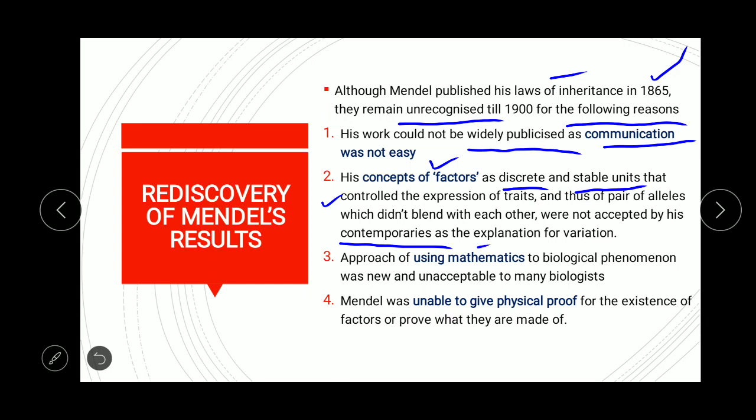The third reason was his approach of using mathematical logic — that is equations and ratios. This was unacceptable to many biologists because at that time no one was using mathematics to formulate biological rules. This concept was entirely new.